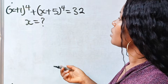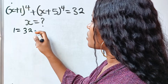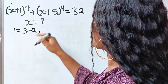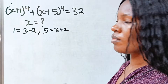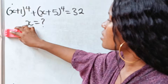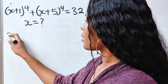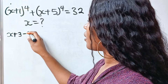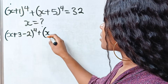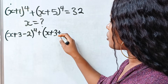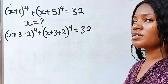First of all, let's note that 1 is the same thing as 3 minus 2, and 5 is equal to 3 plus 2. We are going to substitute that into this equation. So we have x plus (3 minus 2) raised to the power of 4 plus x plus (3 plus 2) raised to the power of 4 is equal to 32.